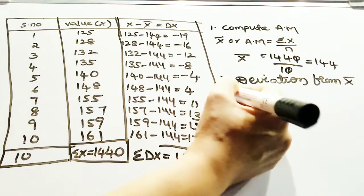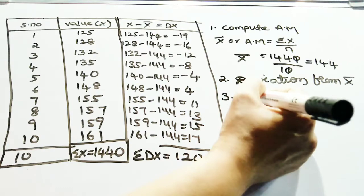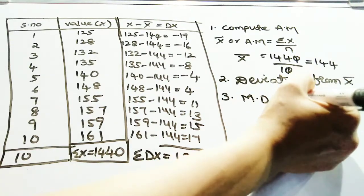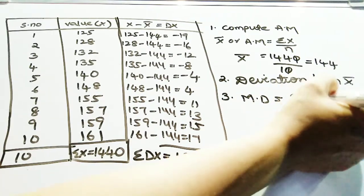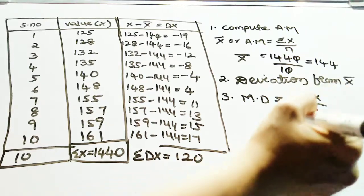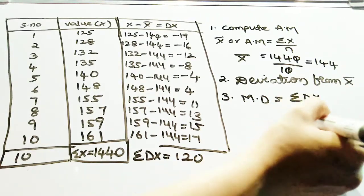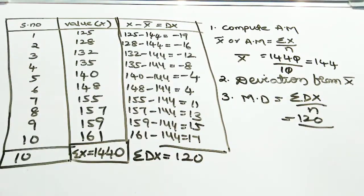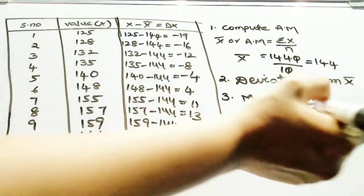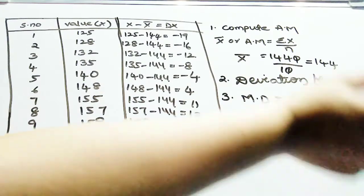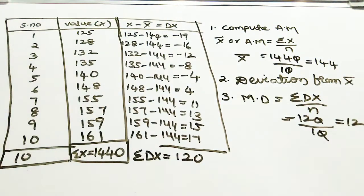The third step is to find mean deviation. The formula is: mean deviation equals summation dx by N. Summation dx is 120 and N is 10. So mean deviation equals 120 divided by 10, which equals 12. Mean deviation is equal to 12.